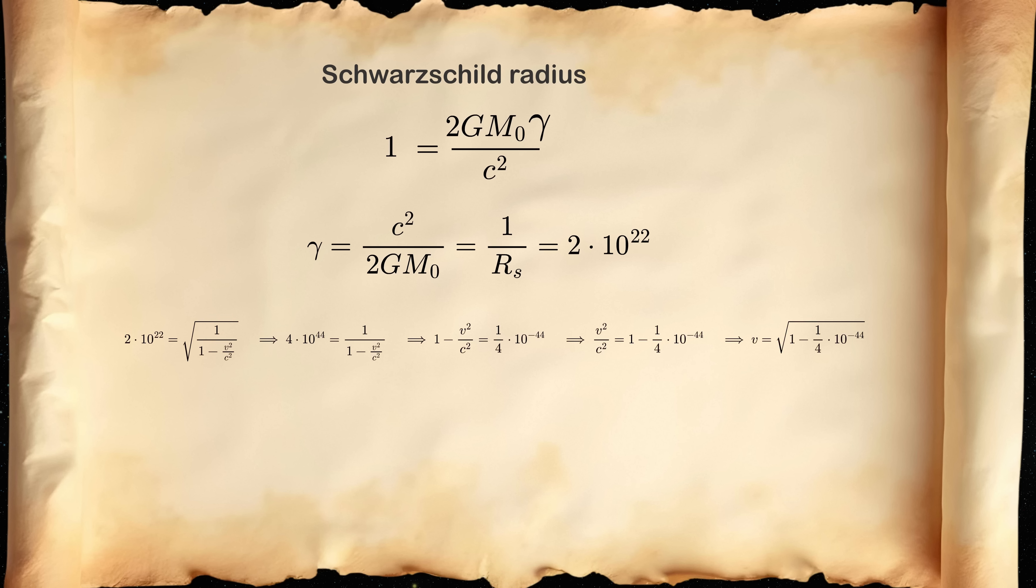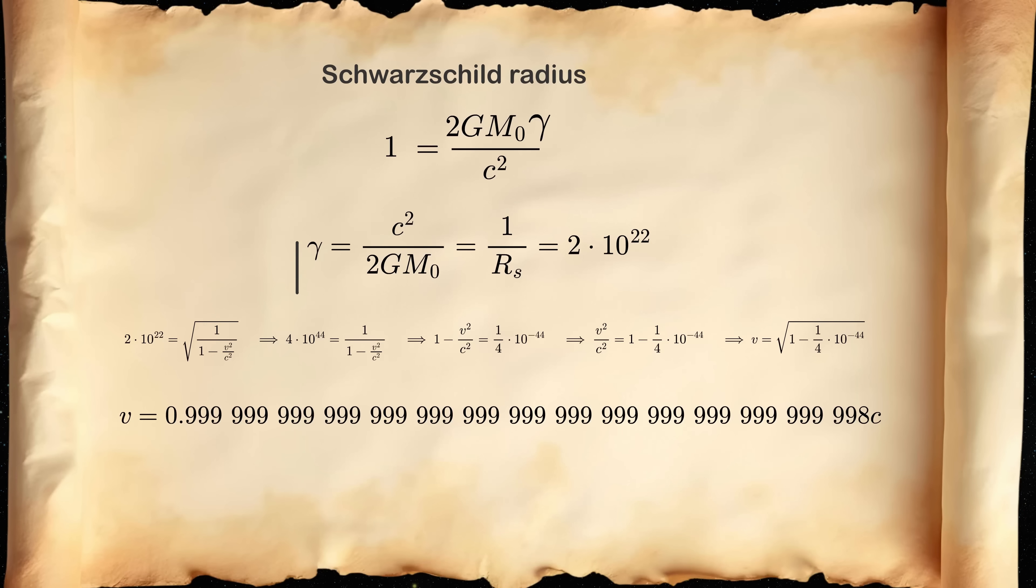And you will get something very crazy, like 0.0 and now 44 nines and then 8 times the speed of light. So I'm not going to use these velocities. But I just use this gamma factor, which is 10 to the 22.